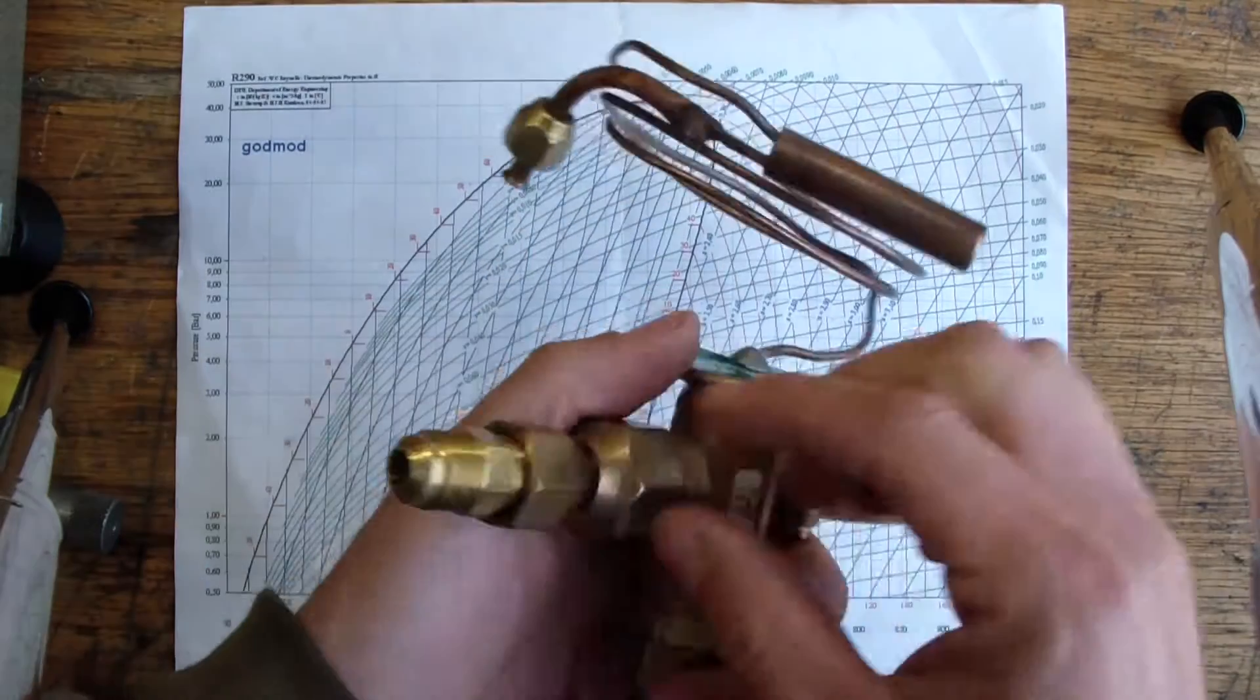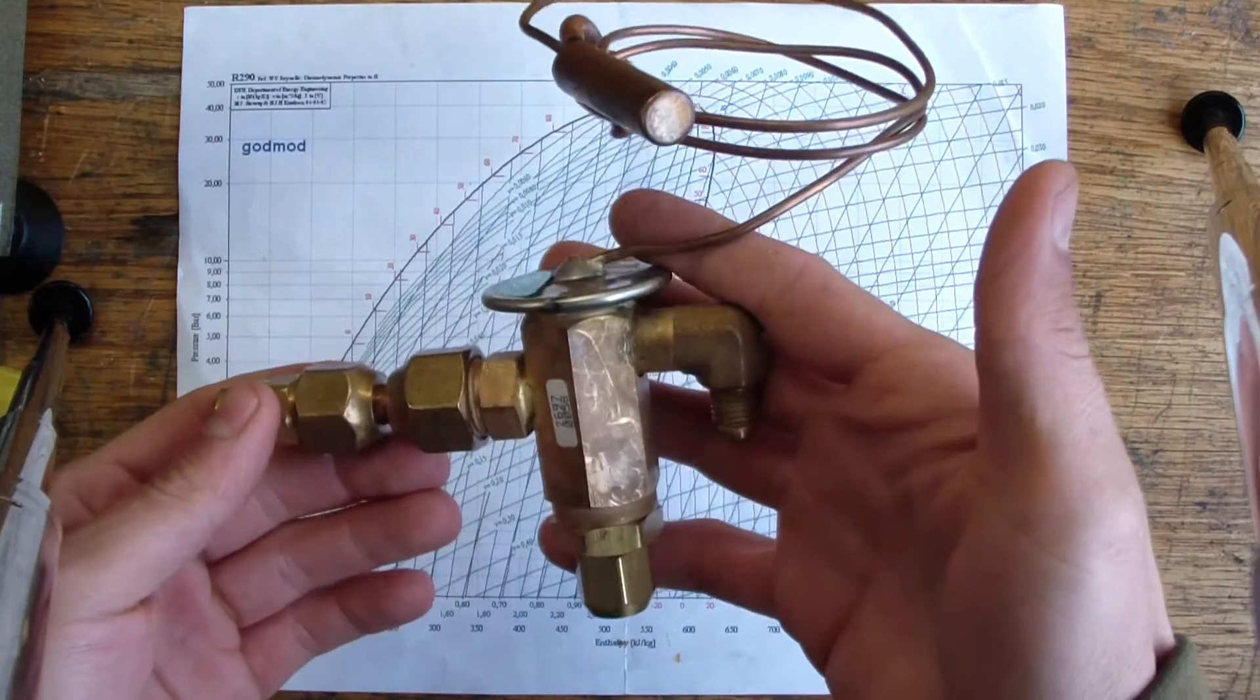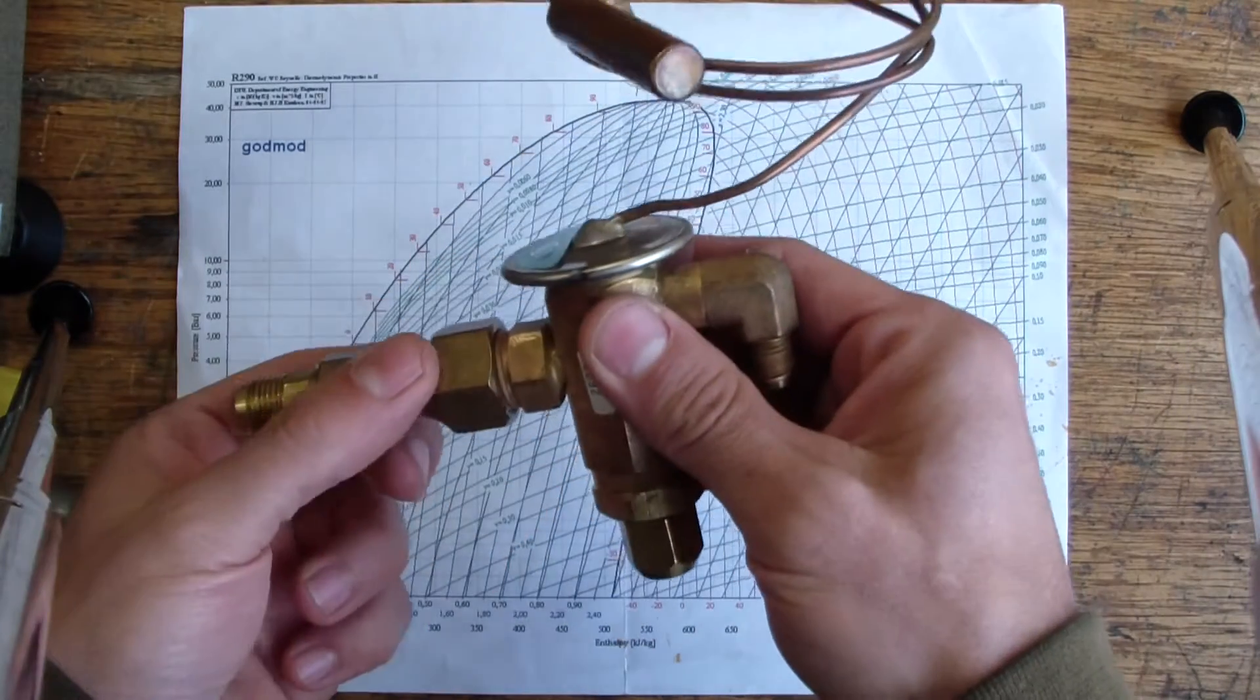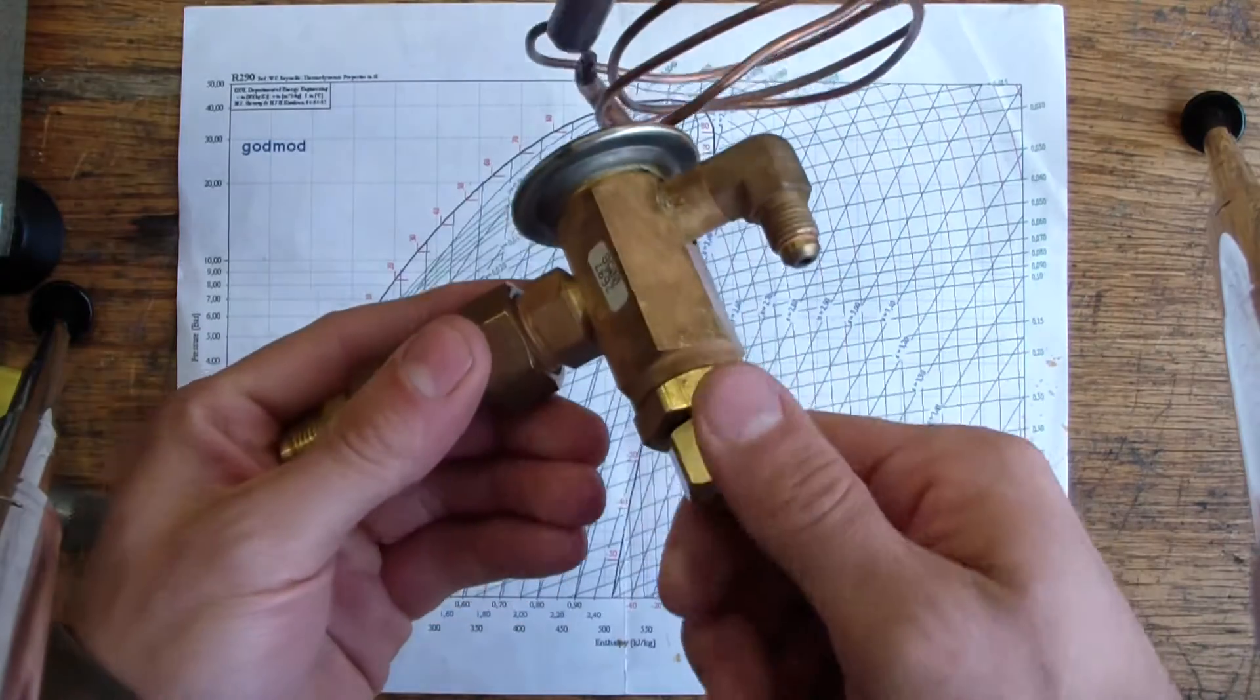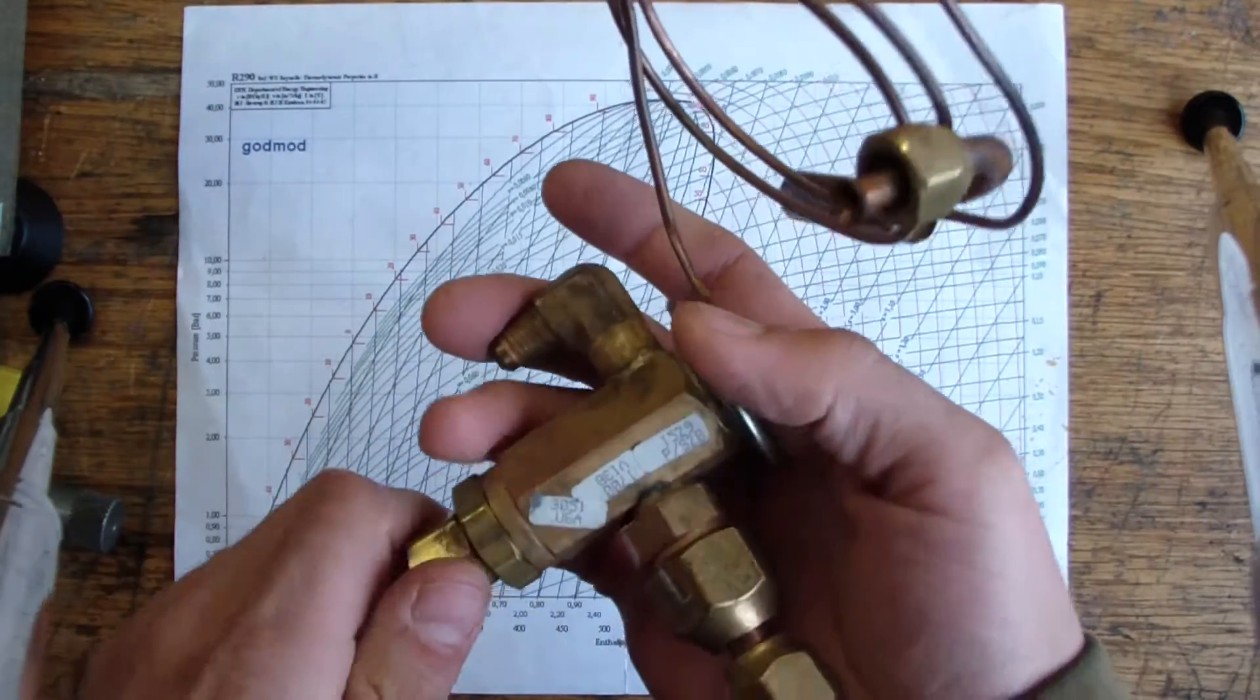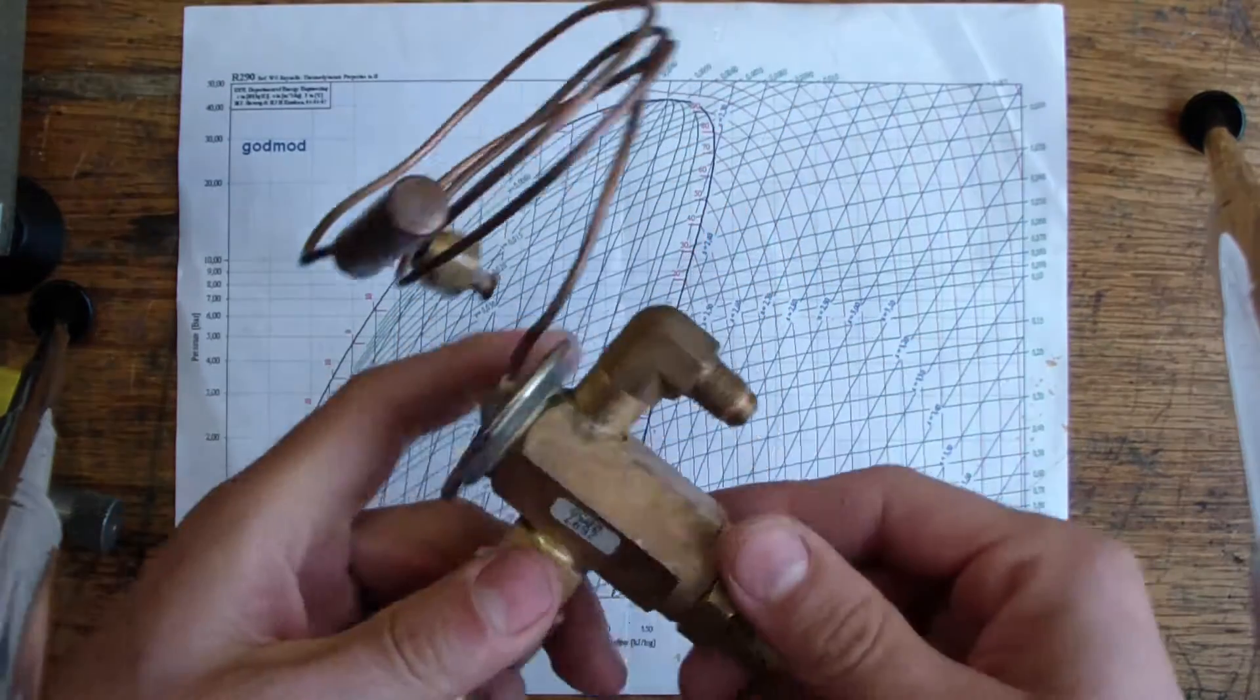This is a thermostatic expansion valve, also known as a TEV. This one's a quarter ton, originally made for R22. There's inlet, outlet right here. We have superheat control at the bottom. We have a sensing bulb. If you read some books on refrigeration, which you really should, you'll learn all about these things.